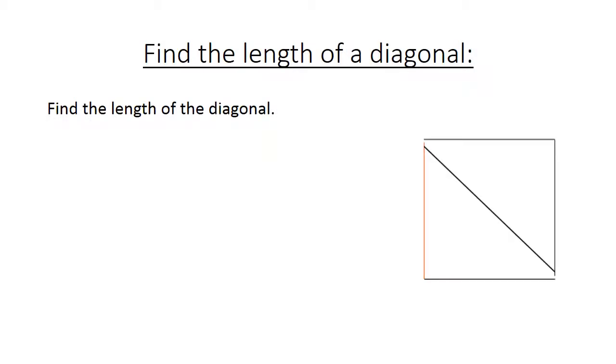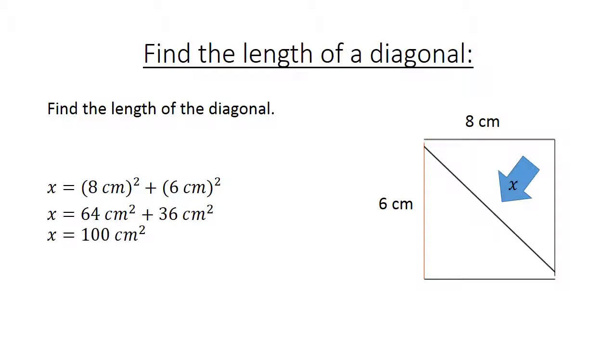Find the length of a diagonal. It is called X. We have 8 cm and 6 cm. X equals 8 cm squared plus 6 cm squared equals 64 cm squared plus 36 cm squared equals 100 cm squared, and the square root of 100 cm squared equals 10 cm.